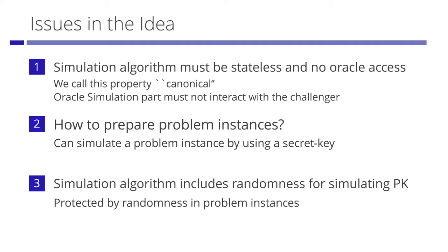Most well-known selectively secure schemes have canonical all-but-one reductions. Next, in security reductions we have a problem instance, but in a real scheme we do not. So the question is how to construct a watermarked function in a real scheme. In fact, we can observe that we can simulate a problem instance by using a secret key of the scheme. Lastly, the oracle simulation part includes randomness for simulating the public verification key. Giving this information to the adversary might cause a problem. However, it does not harm the security, thanks to randomness in problem instances.